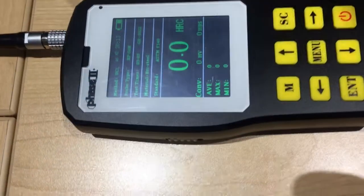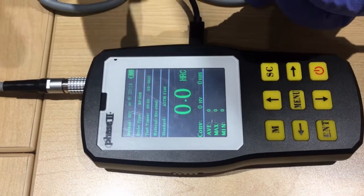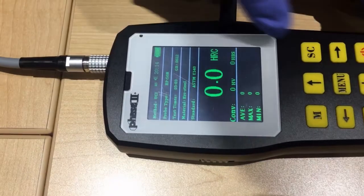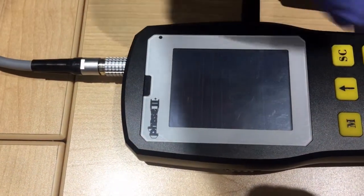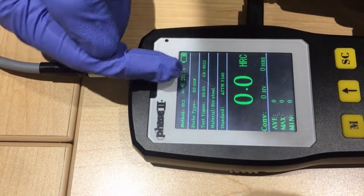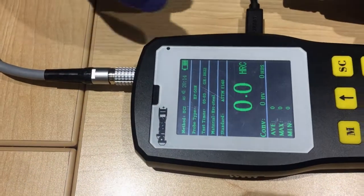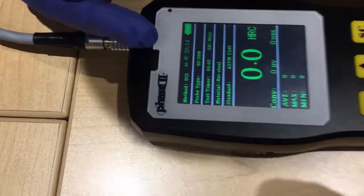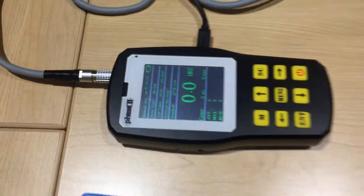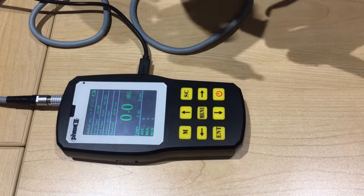If the probe is not correctly linked, we can see on the machine here, probe type, it will show an arrow. And here we can see it's HP 50 Newton, so it's correctly connected.